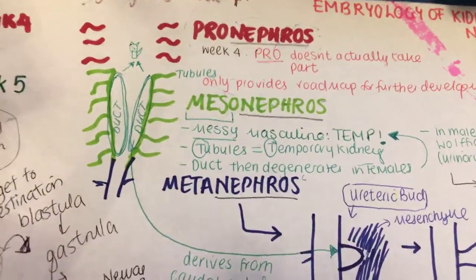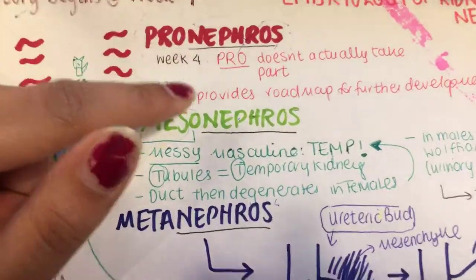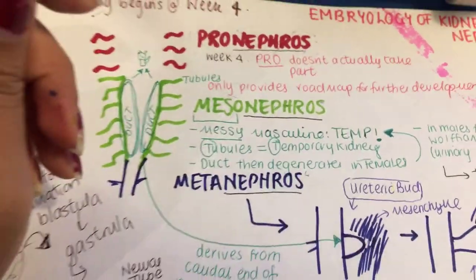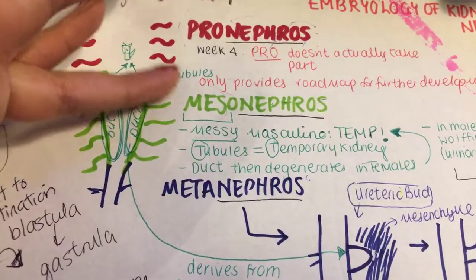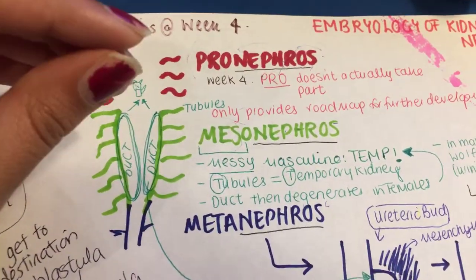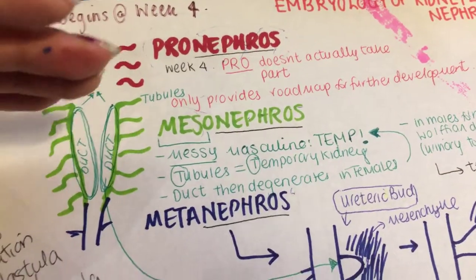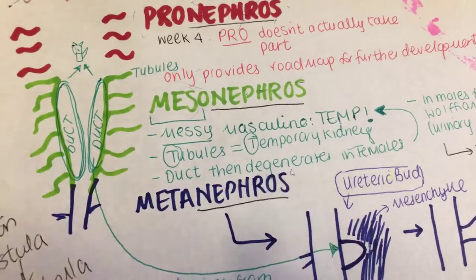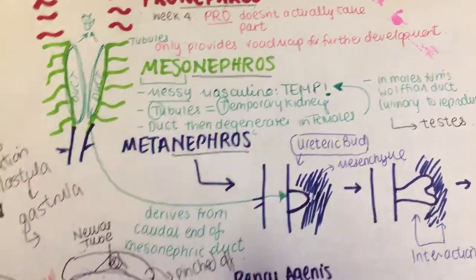The pro-nephros — let's say Harry's walking trying to find his destination. The pro-nephros does not actually function as a kidney; it is dysfunctional. All it does is provide the groundwork or the roadmap for further development of the kidney.